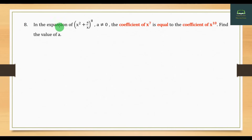Question number 1. The expansion of x squared is 1.8. The expansion of x squared is 2.8. This will be 99.00.